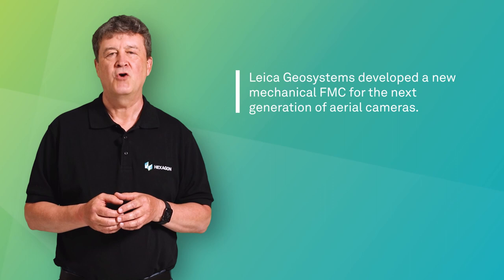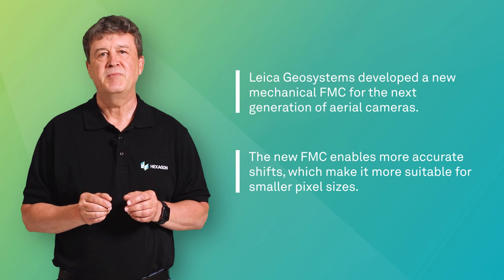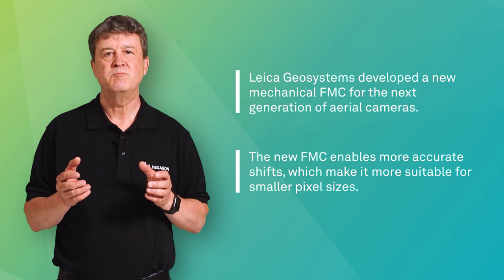Leica Geosystems designed a new mechanical FMC for the next generation of aerial cameras. The big advantage compared to TDI is the sub-pixel accuracy. This is important because requirements for ground resolution are increasing and blurring becomes more visible for smaller pixels.